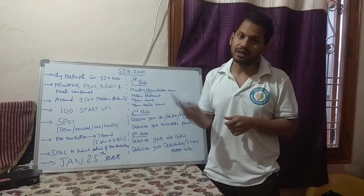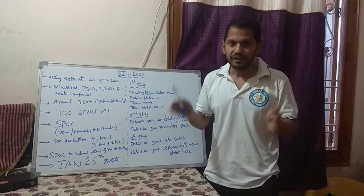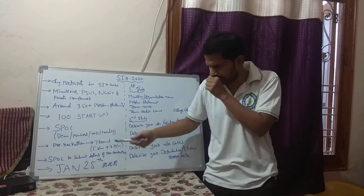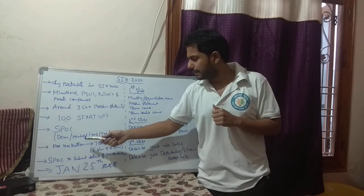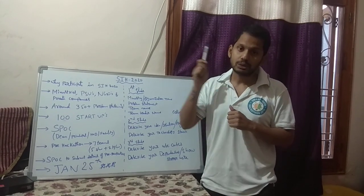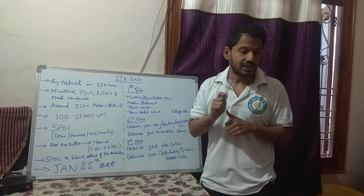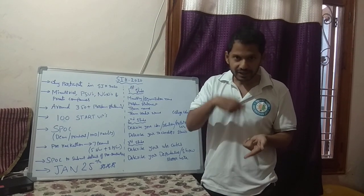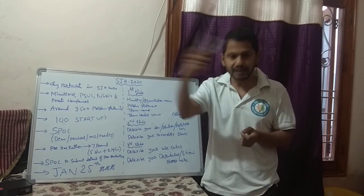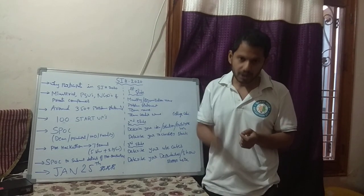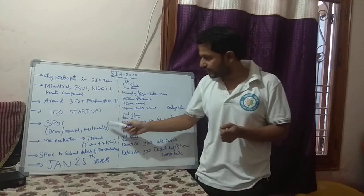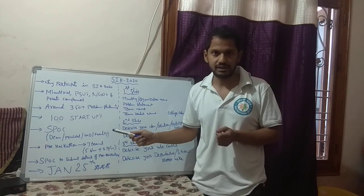This time they have changed the module. First, the college has to identify the SPOC — Single Point of Contact — who can be the Dean, Principal, Head of Department, or any faculty. This time the SPOC has to conduct a pre-hackathon, meaning an internal hackathon, within the college. Previously students would directly submit their ideas, but now the internal hackathon has to happen first.